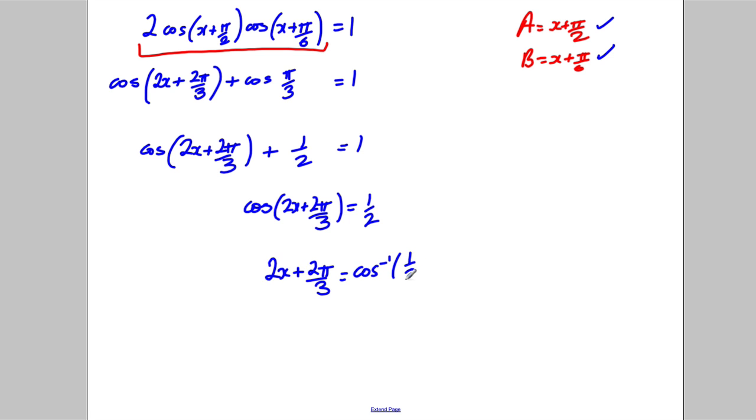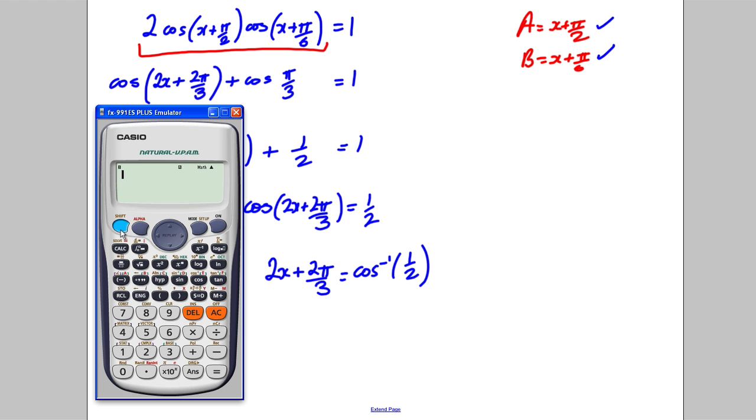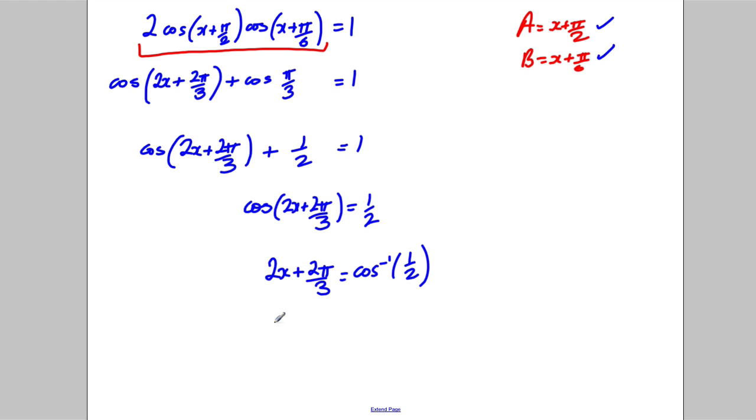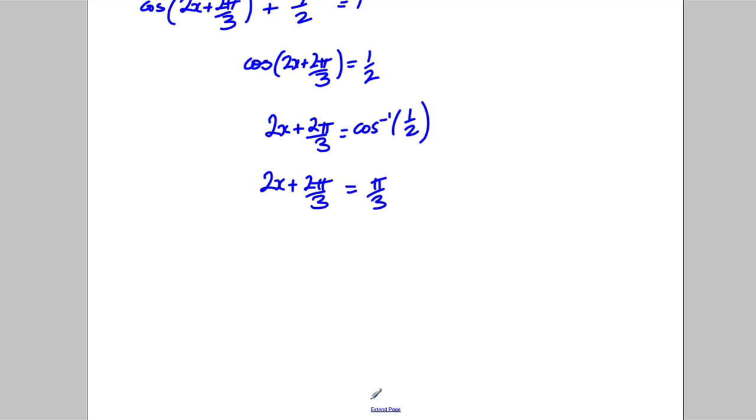the inverse cos of negative a half. Inverse cos of negative 0.5 is pi by 3. So 2x plus 2 pi by 3 is equal to pi by 3. Okay, now that's the principal value.